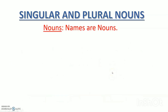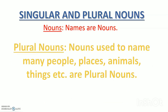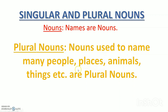Let's move to the meaning of plural nouns. What are plural nouns? Nouns used to name many people, places, animals, things, etc. are plural nouns. Those names which indicate many people, many places, many animals, many things, etc. are plural nouns.